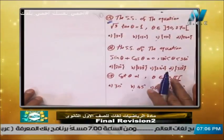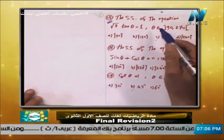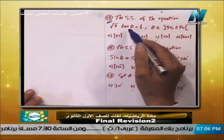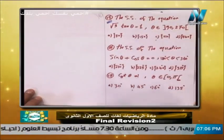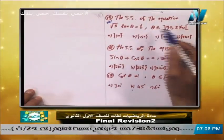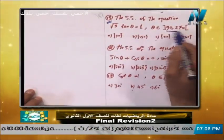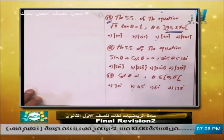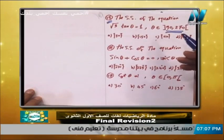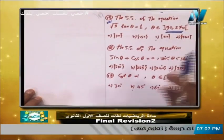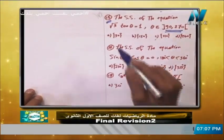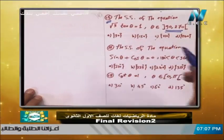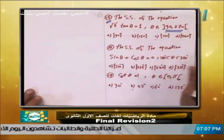Question number 15: find the solution set of the equation √3 tan theta equals 1, where theta is between 90° and 270°. So we start from the second quadrant to the third quadrant. The options are 30, 150, 210, or 240.